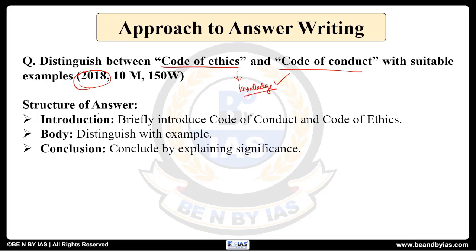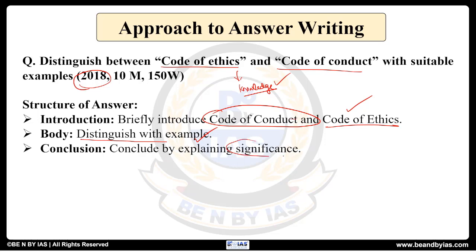The structure of the answer should be: in the introduction, we will briefly write about code of conduct and code of ethics. Then in the body part, which is the main one, we will differentiate between code of conduct and code of ethics with examples. And finally, we will conclude by explaining the significance.